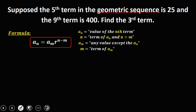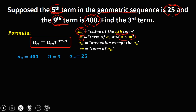Since we have the fifth term and the ninth term, and the condition is that n is greater than m, the ninth term is n. So a sub n equals 400 and n equals 9. For a sub m, we use the fifth term, where the value is 25, so m equals 5 because 25 is the fifth term. Then r is the unknown common ratio.